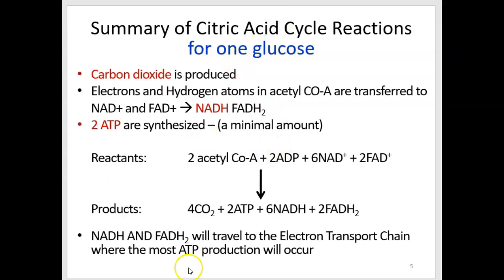So let's think about the Krebs cycle in terms of starting with a glucose that has six carbons. First of all, you know that we're going to break that down into two three-carbon compounds before we ever get to the Krebs cycle. Therefore, the Krebs cycle actually turns twice for one glucose.